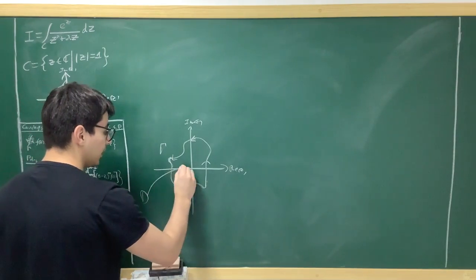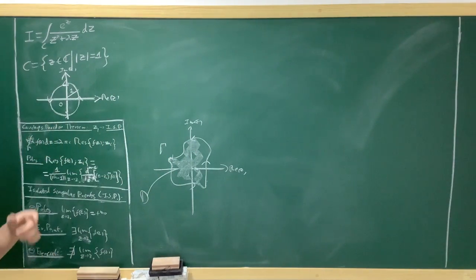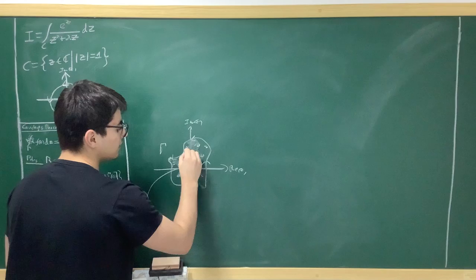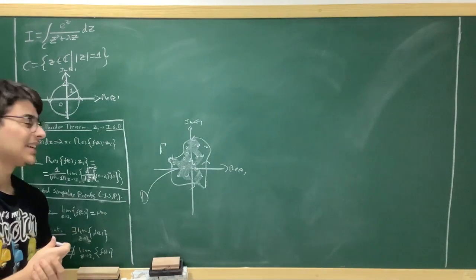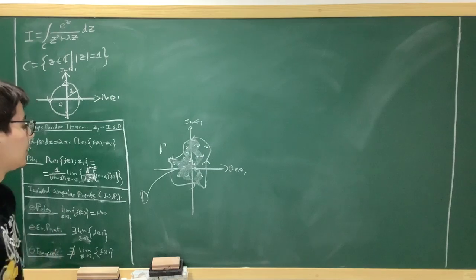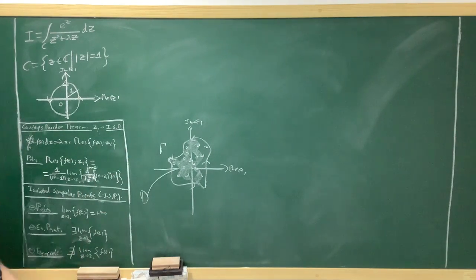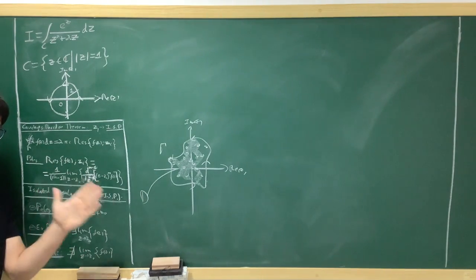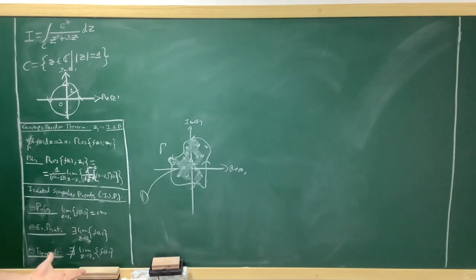We have a closed contour, and our region D is the inside of this contour. The points Ci inside the region are like holes where the function is not analytic — those are the singular points. We just have to calculate the residue at those points Ci. Before getting into how to calculate residues, let's distinguish three kinds of isolated singular points — the most common ones we'll encounter are poles.